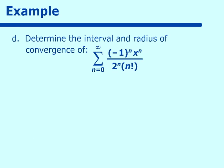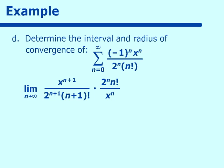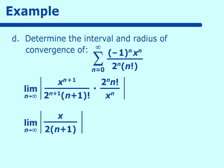Next example: determine the interval and radius of convergence of (-1)^n times x^n over 2^n times n!. Using the ratio test and ignoring the alternating part, we evaluate x^(n+1) over [2^(n+1) times (n+1)!] times [2^n times n!] over x^n. Reducing: x^(n+1) over x^n gives x, 2^n over 2^(n+1) gives 1/2, and n! over (n+1)! gives 1/(n+1). As n approaches infinity, the whole expression approaches 0. So the interval of convergence is (−∞, ∞) and the radius is infinite.